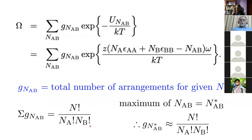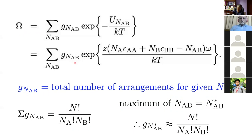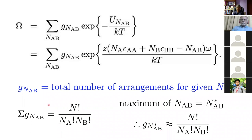We now make an approximation: since we take the logarithm of the partition function to get the Helmholtz free energy, it will be dominated by the maximum value of N_AB. So we ignore all other terms in the summation and simply take the maximum term. The degeneracy for the maximum value of N_AB equals this expression, and this approximation — replacing the summation by its maximum term — is applied in all quasichemical models to make the problem tractable.